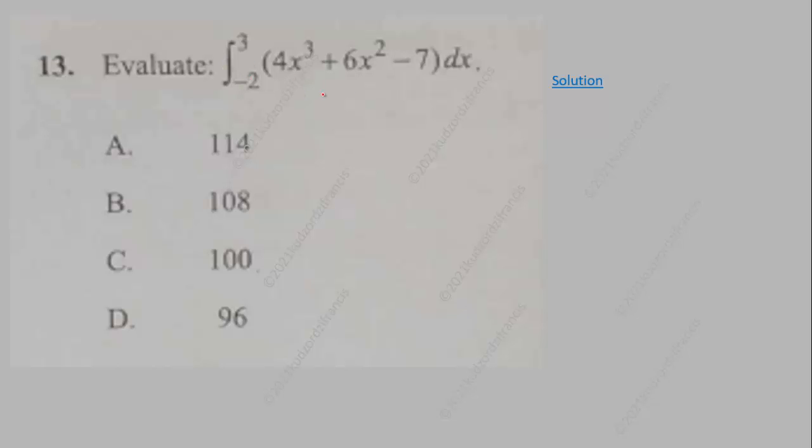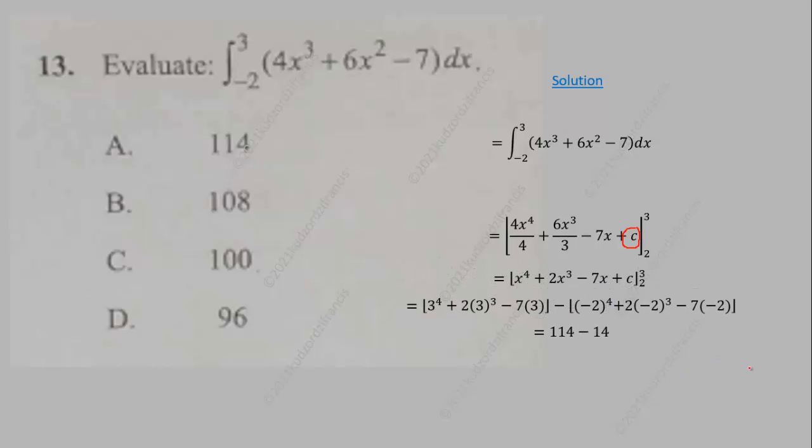Evaluate this integral from negative 2 to 3 of 4x cubed plus 6x squared minus 7 dx. This is the integral given to us. Integrate and then substitute the limits. If you integrate 4x cube, you get 4x to the 4 over 4. If you integrate 6x squared, you get 6x cubed over 3. For integration, you add to the exponent divided by the result, and this one will give you negative 7x. This will give us the substitution, and when we substitute, we simplify to get 114 minus 14, which gives you 100.